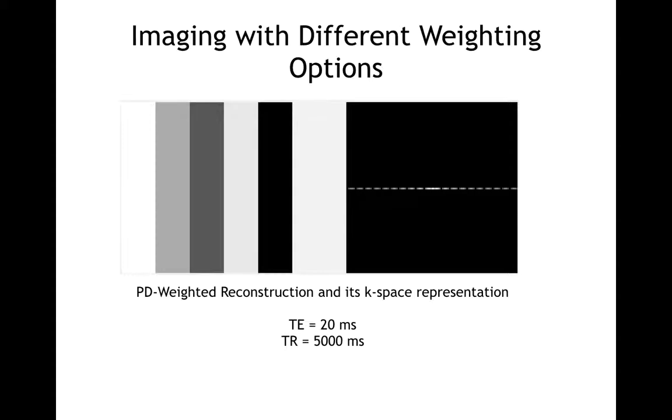I continued with a proton density weighted image. In order to eliminate the effects of both T1 and T2 relaxations, I set TE to a very low value, 20 milliseconds, and TR to a very large value, 5000 milliseconds. It can be seen that the signal intensities of the tissues are proportional to their proton densities, water and fat having the most intense signals, followed by muscle and liver.